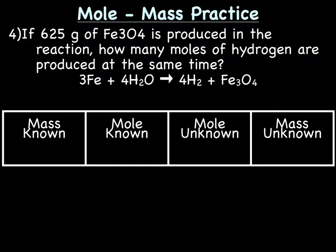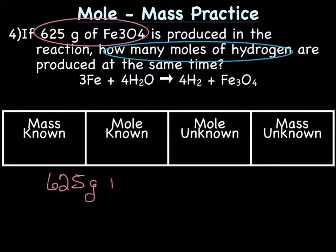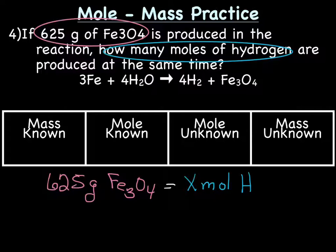We need to try another problem—this one is a little different, so it's important to continue. First, write out the math problem. The problem states: if 625 grams of Fe3O4 is produced in the reaction, how many moles of hydrogen are produced at the same time? Our known is 625 grams Fe3O4, and our unknown is x moles H2—hydrogen is diatomic, so we always write H2.